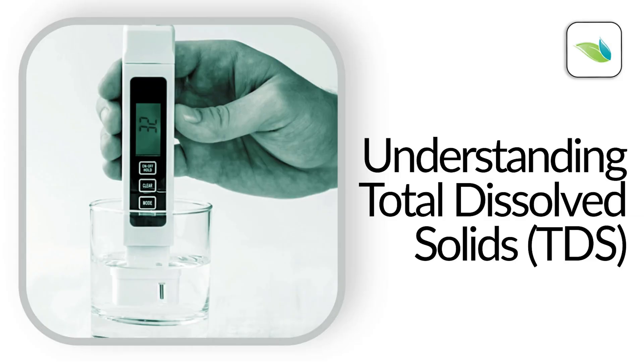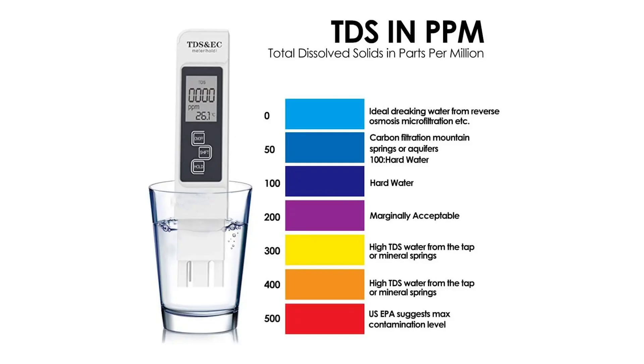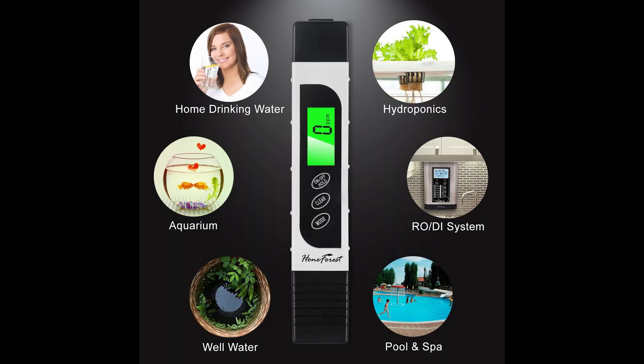EC and TDS represent two completely different ways of measuring the nutrients in your water. TDS stands for total dissolved solids and this is a much more basic approach — it's just measuring the parts per million in your water, the amount of particulates in your water, or how dirty your water is. This is used a lot for measuring tap water.